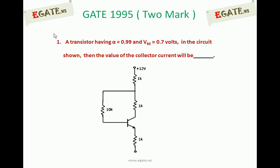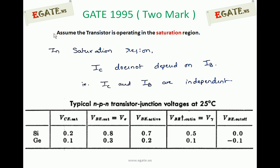We are assuming that the transistor is operating in saturation. In the saturation region, collector current does not depend on base current — IC and IB are two independent variables. Only in the active region does IC depend on IB, where IC equals beta times IB. Since we are assuming saturation, we cannot use that relation.